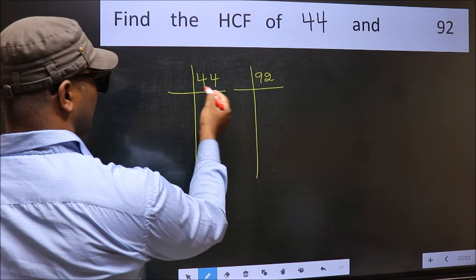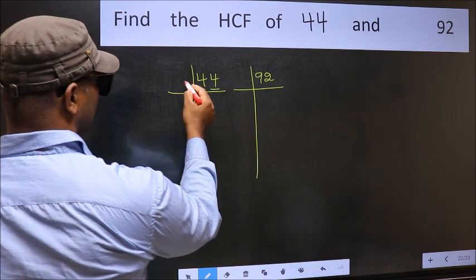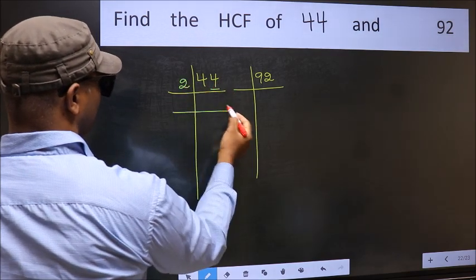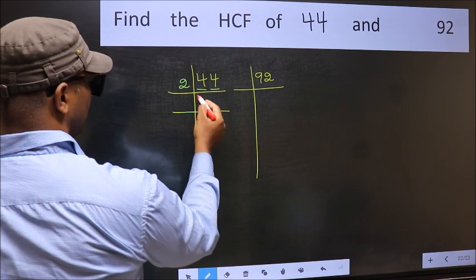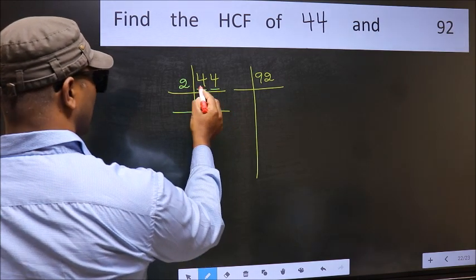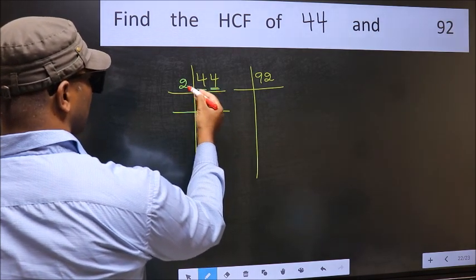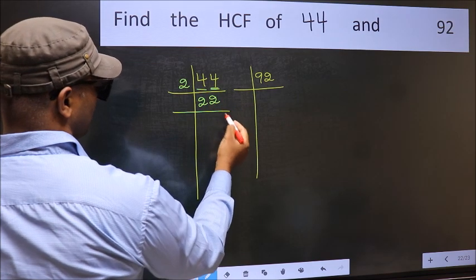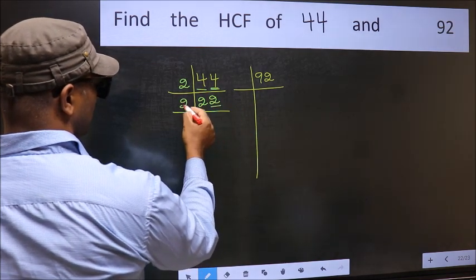For this number, the last digit is 4, which is even, so we take 2. First number 4: when do we get 4 in the 2 table? 2 times 2 is 4. The other number 4: 2 times 2 is 4. Now the last digit is 2, which is even, so take 2.